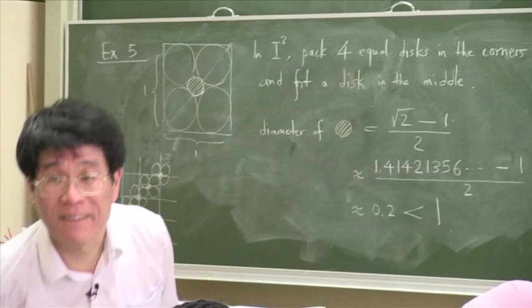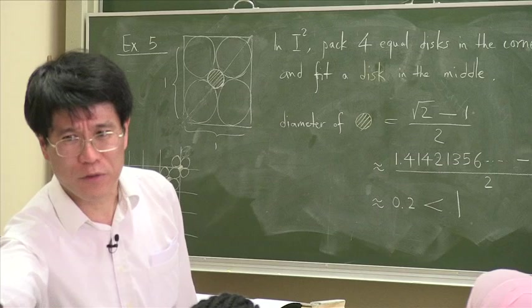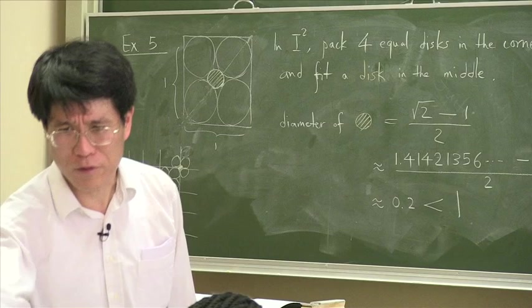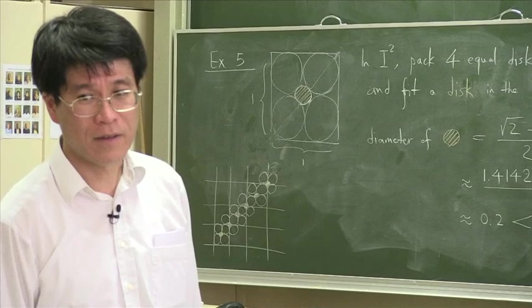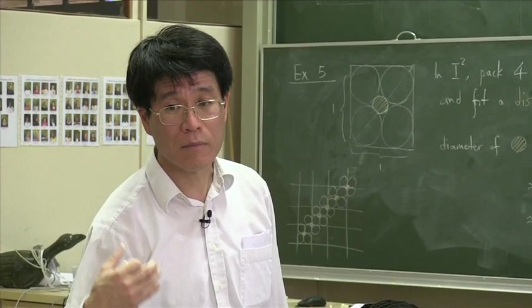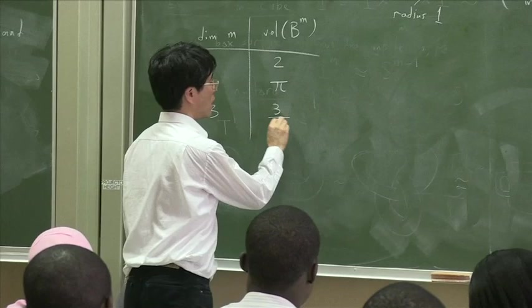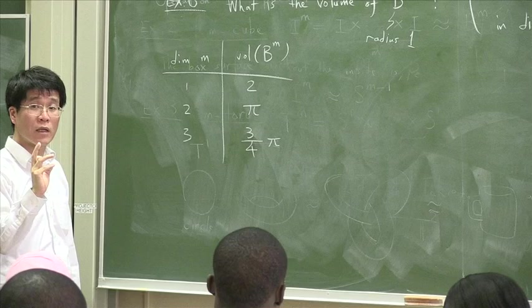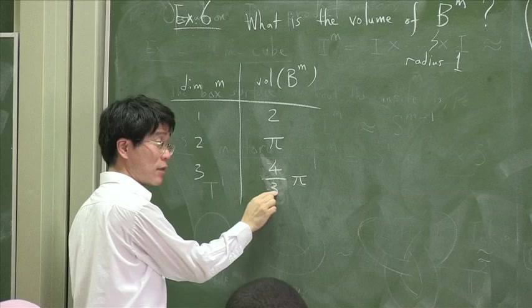And how about the volume of the three-dimensional ball? You all know this. What do you think? Do you remember learning a formula somewhere in your life? What was it? Say something so that you can make a mistake. Three pi over four. Is this right? No. It's four pi over three. But it's not too far away.